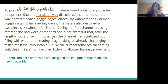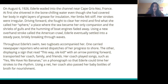On August 6th, 1926, Ederle waded into the channel near Cape Grisnes, France. At first, she shivered in the cold, chilling water, even though she had covered her body in eight layers of grease for insulation. Her limbs felt stiff and her strokes were irregular. Driving forward, she fought to clear her mind and find what she called her sphere — a place where the sea became her only companion and the shrieks of the gulls and the humming of the boat engines faded away. Using a new overhand stroke called the American Crawl, Ederle settled into a steady pace, briskly breaking through the waves.